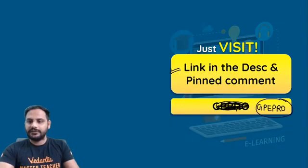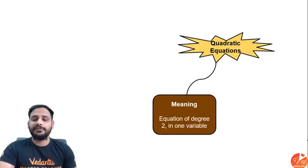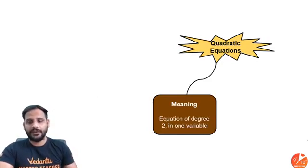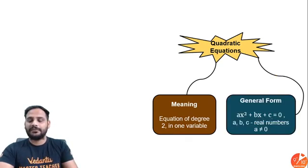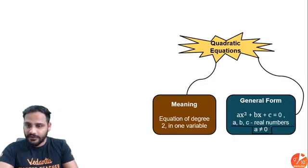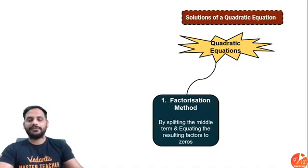Now quadratic equations. First, the meaning of quadratic equation is an equation of degree 2 in one variable. The general form is ax² + bx + c = 0, where a, b, and c are real numbers. Remember the most important thing: a is not equal to 0. This is your general form for the quadratic equation.